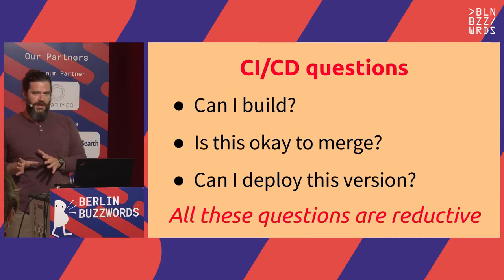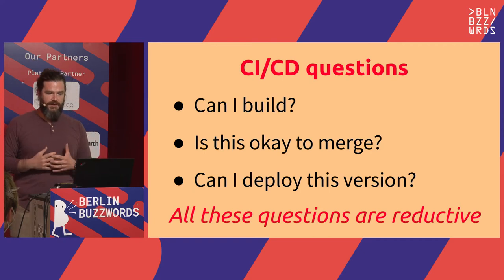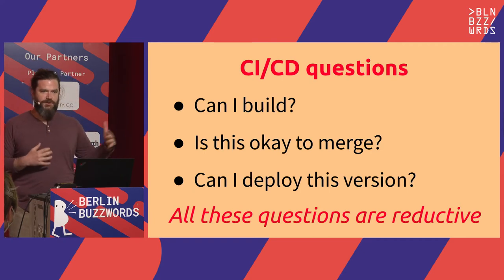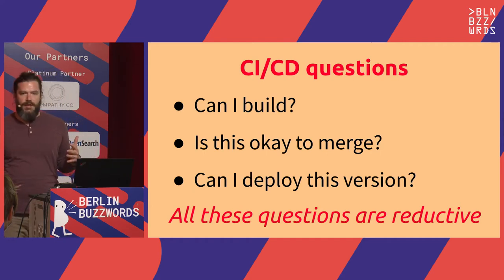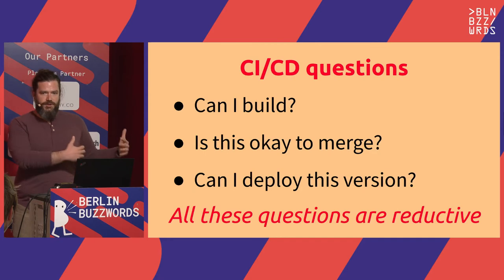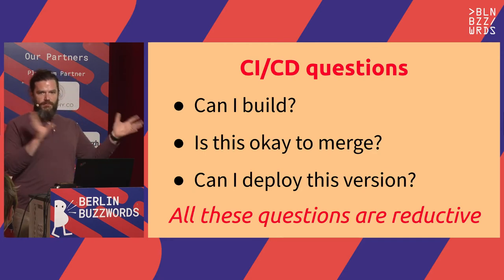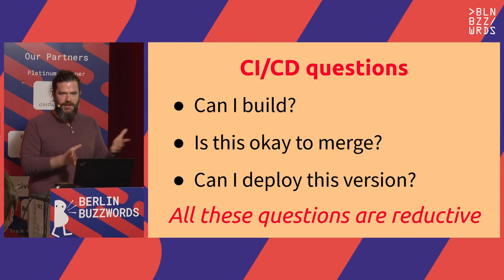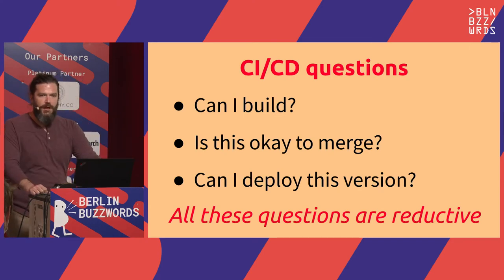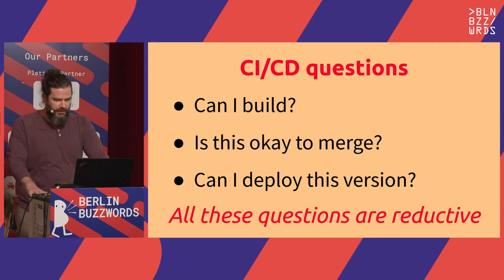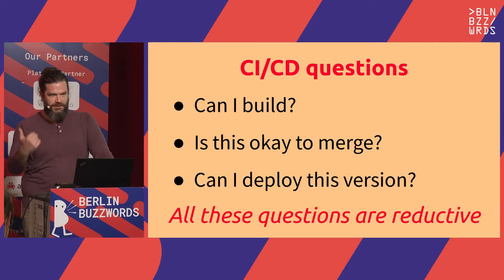These are fundamentally reductive questions. We take a lot of complexity about the state of our system and reduce it to very simple binaries of yes or no. These questions are reductive because the actions we take are reductive. You either have built your software or you have not. You can merge it or you cannot — there's no half merge. There's no real half deploy. You still have to ship it somewhere, and it's either shipped or it isn't.